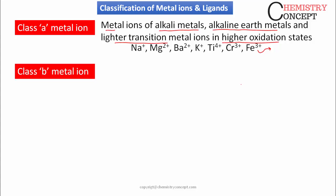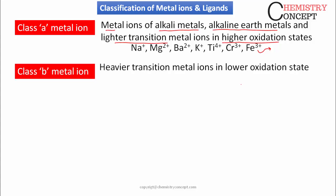Class B metal ions include heavier transition metal ions in their lower oxidation state, such as copper, mercury, palladium, platinum, and silver — all in their lower oxidation state. So this was the classification of metal ions.